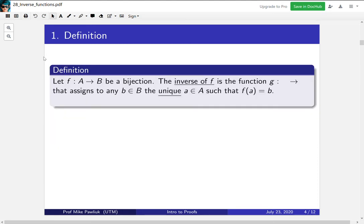Let's start with a definition. Let f from A to B be a bijection. The inverse of the function f is a function g that assigns to any value b in B the unique a in A such that f(a) is equal to b.